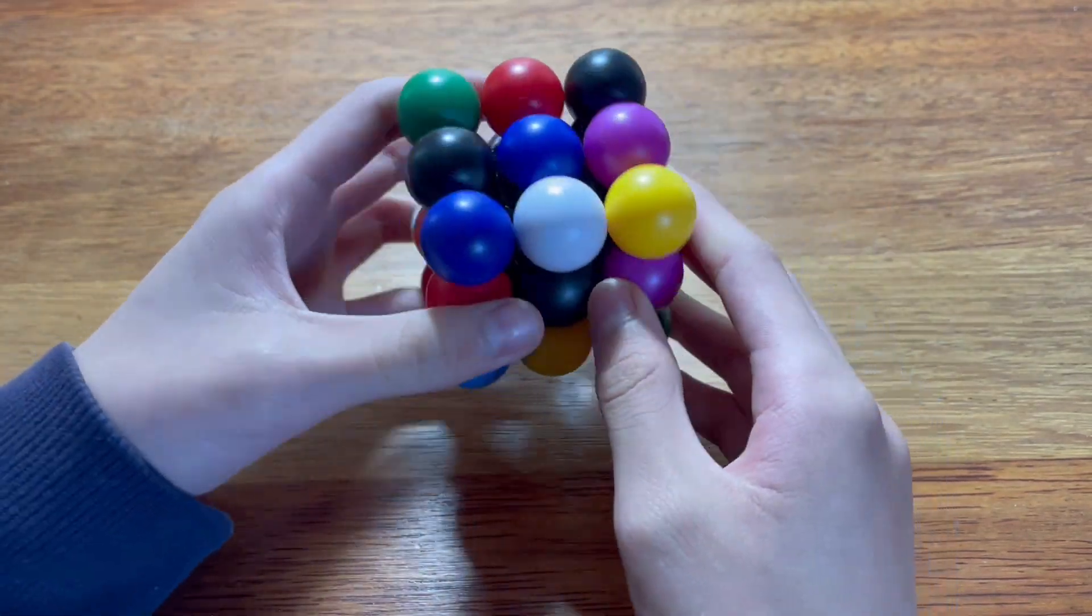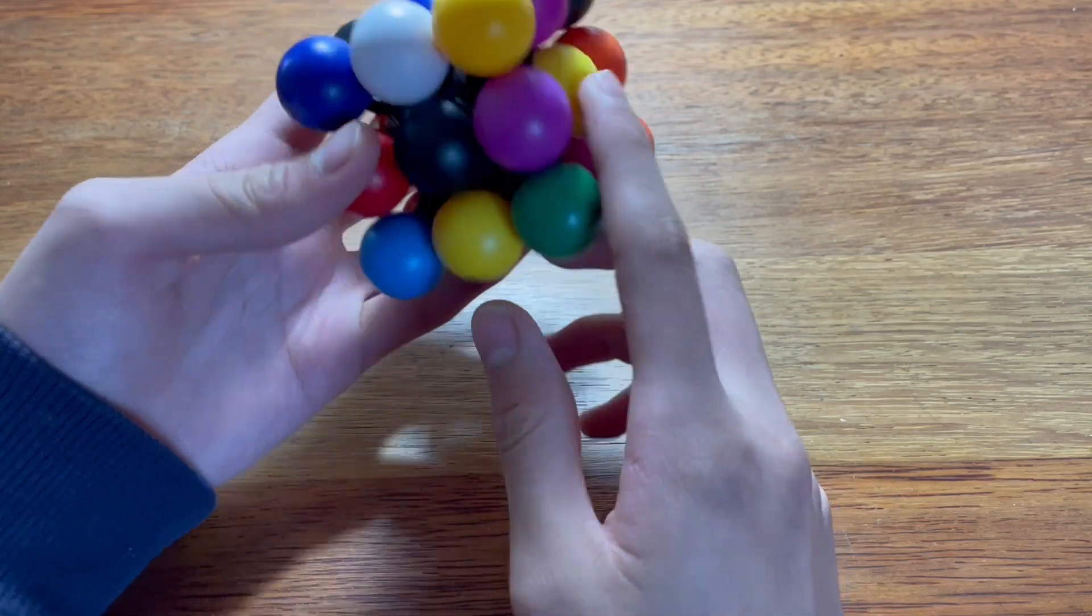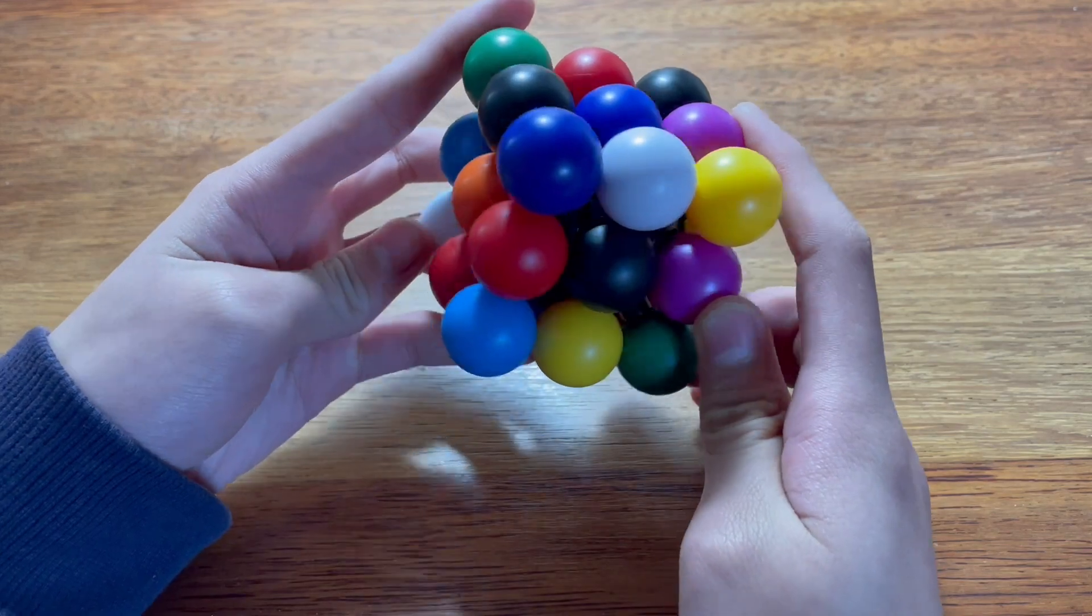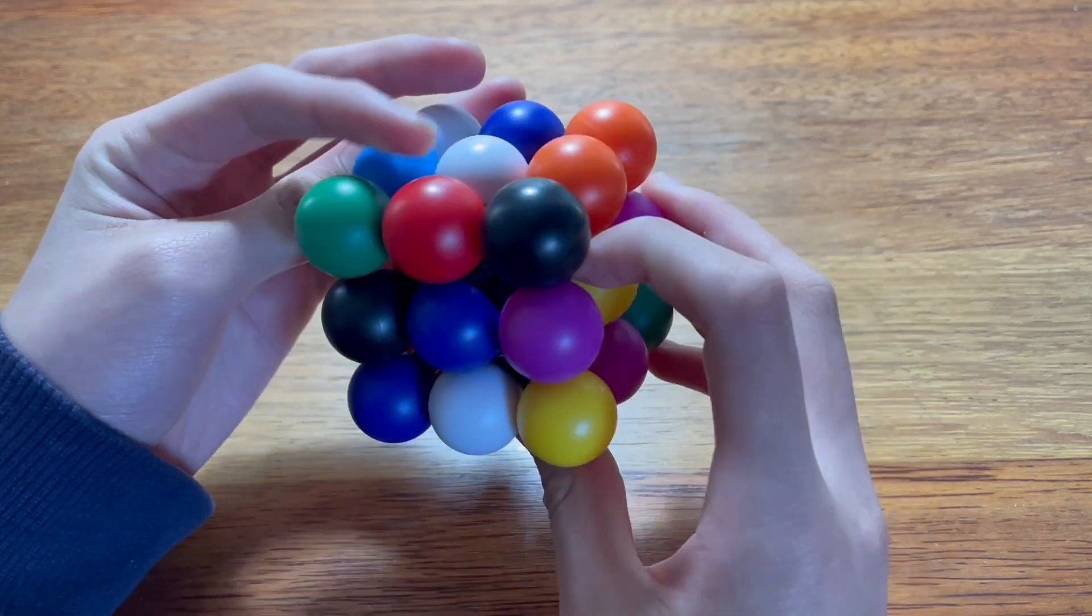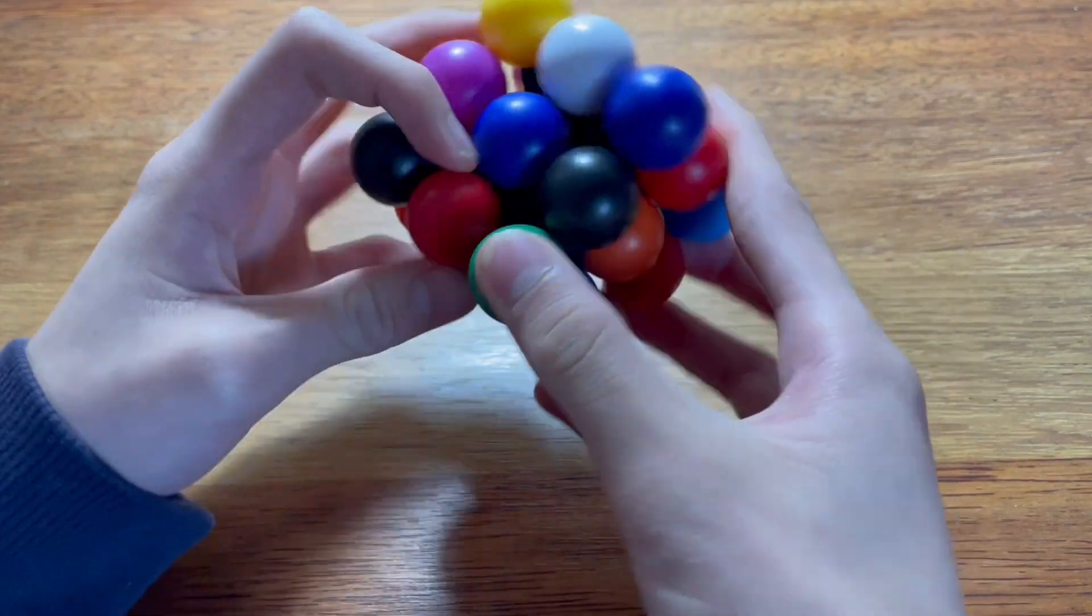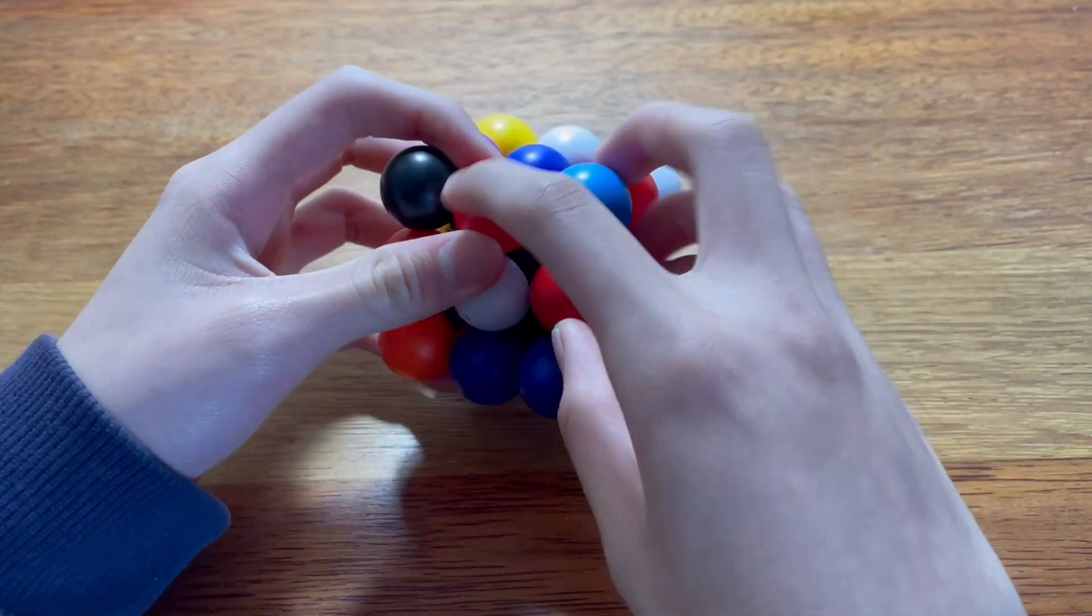So what are the other colors? So green doesn't have a center. Purple - there's these three, right? So there's three edges for purple and then the last one's red. Red also has three edges. Okay, cool.